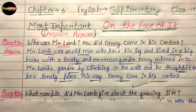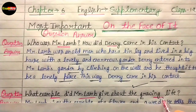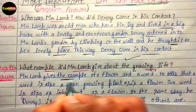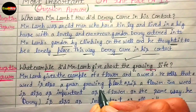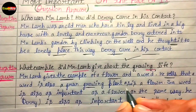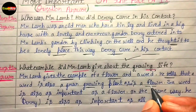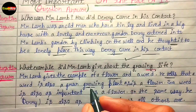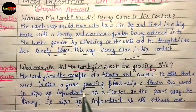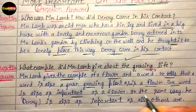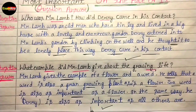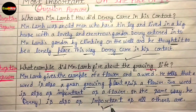The next question is: What example did Mr. Lamb give about growing life? Mr. Lamb gives the example of a flower and a weed. He tells that a weed is also a green growing plant, just as a flower is. A weed is also as important as a flower. In the same way, Derry is also as important as everyone else — everyone is equally important.